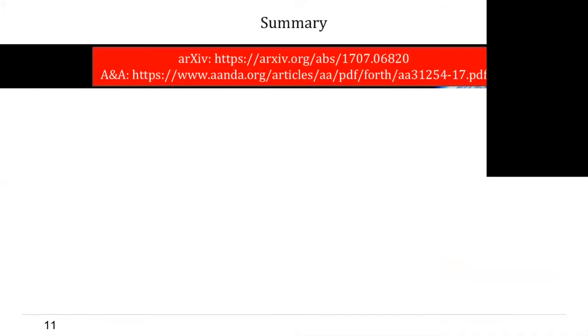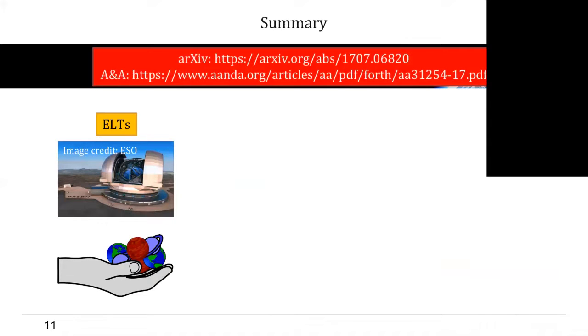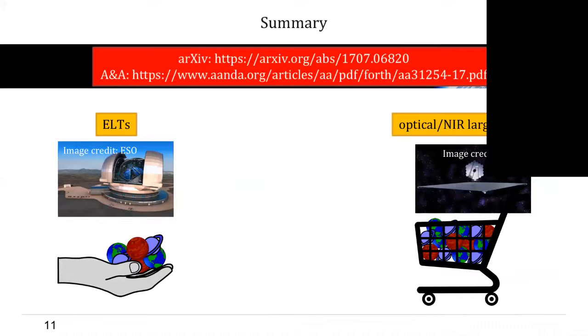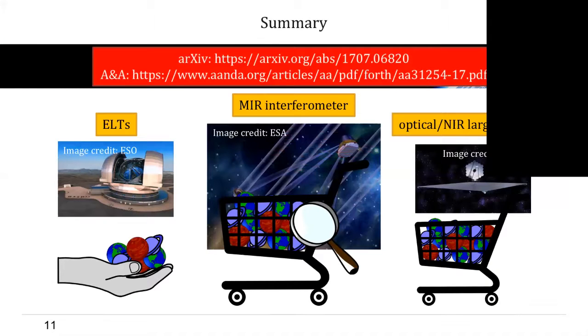Yes, so I will come to a summary, and it will be very short. We have been looking into the ELTs in the beginning, and they will maybe give us a handful of small-sized, directly detected exoplanets. Right now, we have seen that an optical near-infrared large aperture mission would give us even a shopping cart full of such small-sized planets. But the mid-infrared interferometer would give us an even bigger shopping cart full of characterizable exoplanets. Thank you very much.